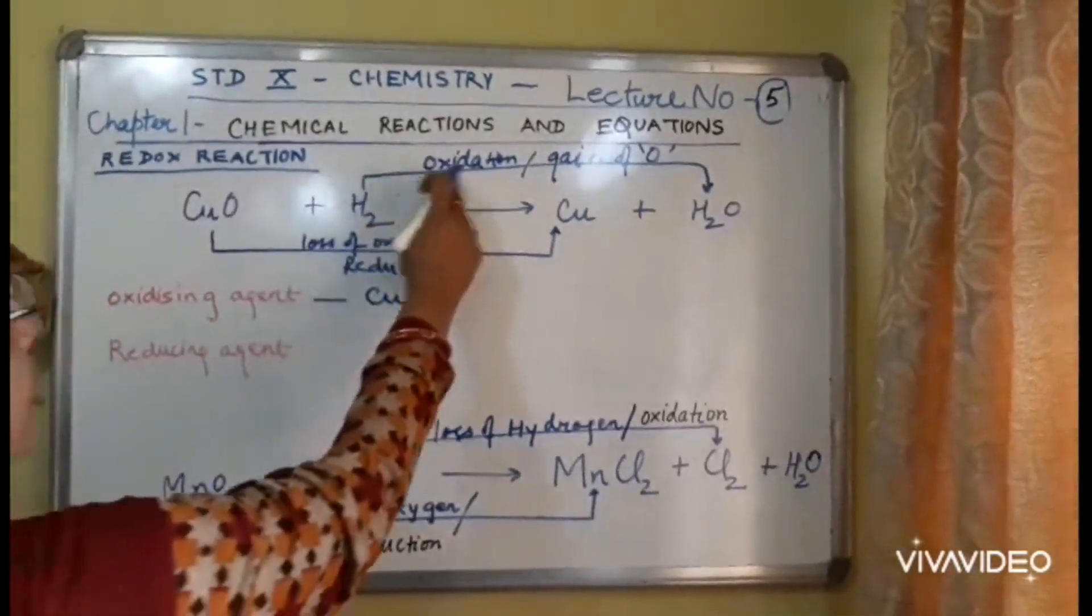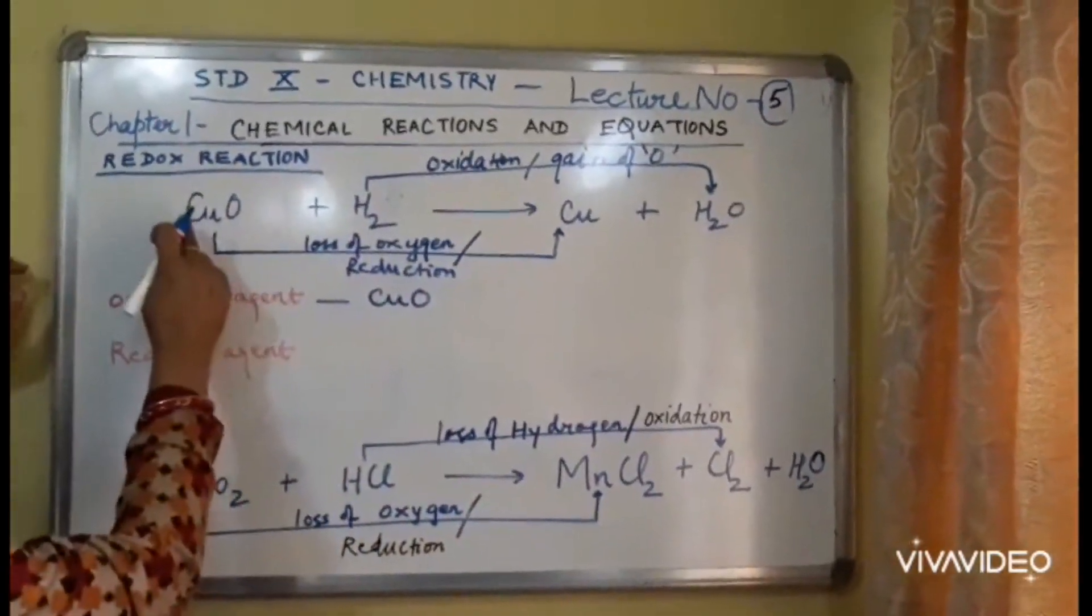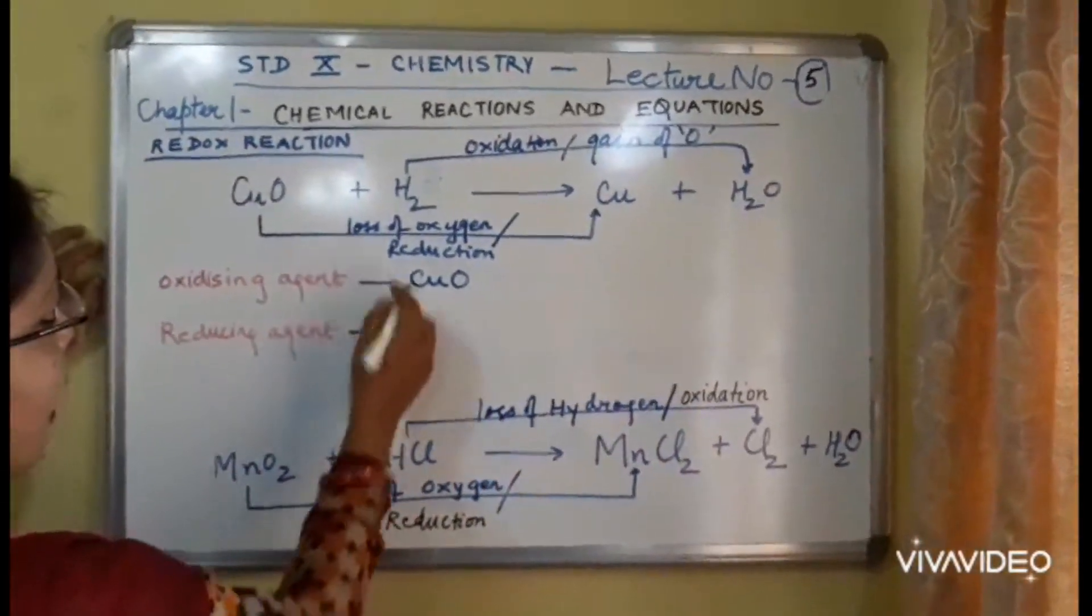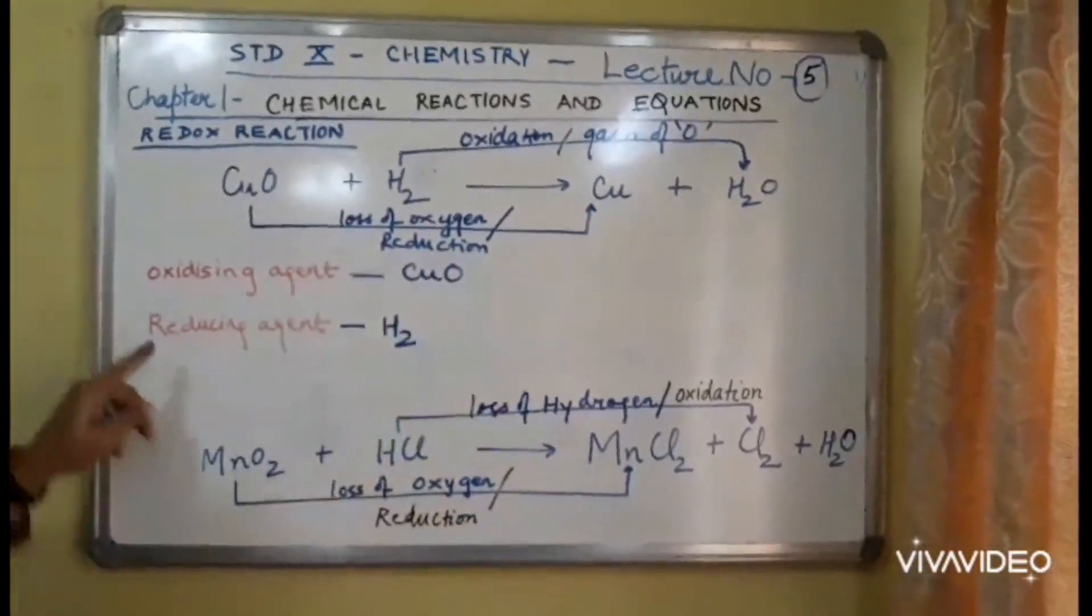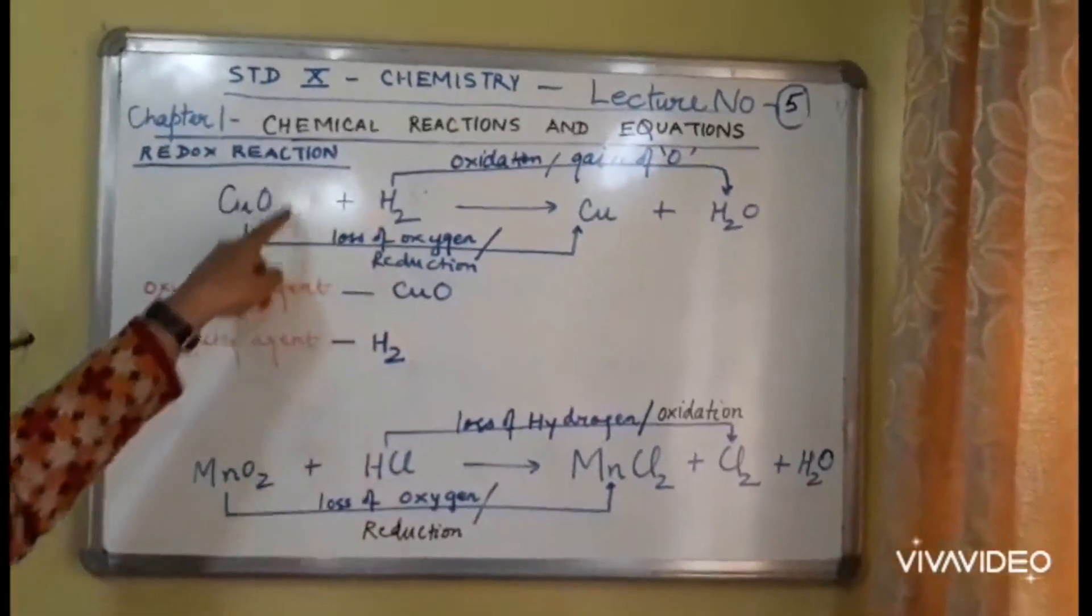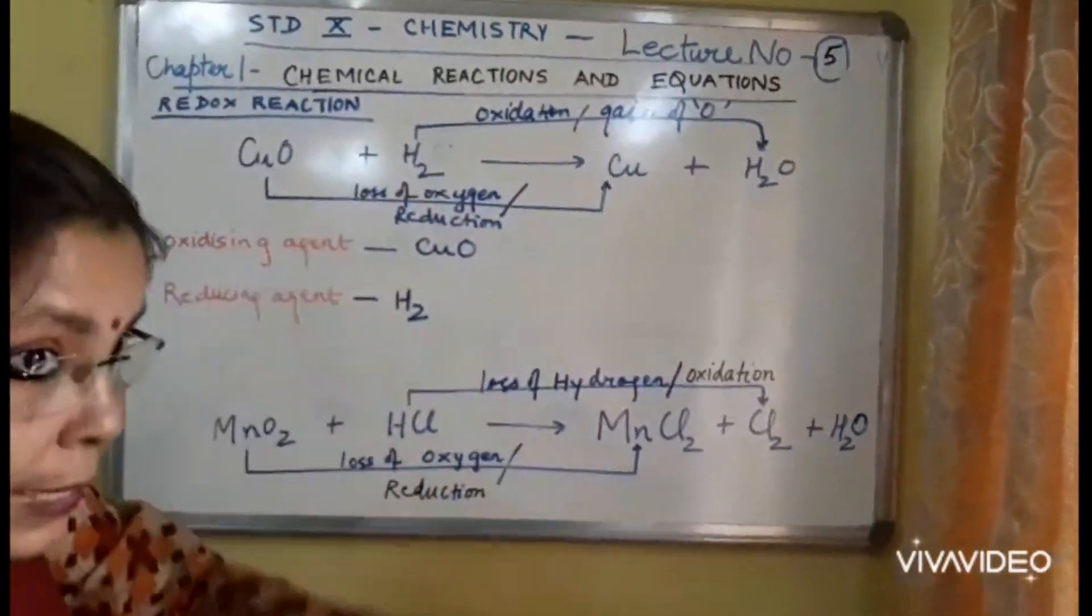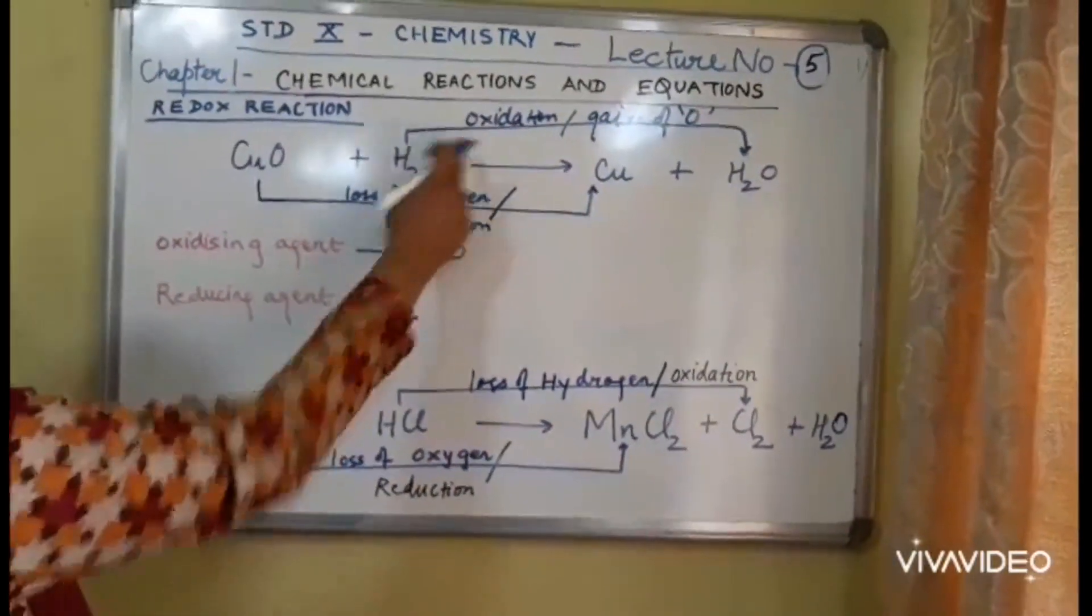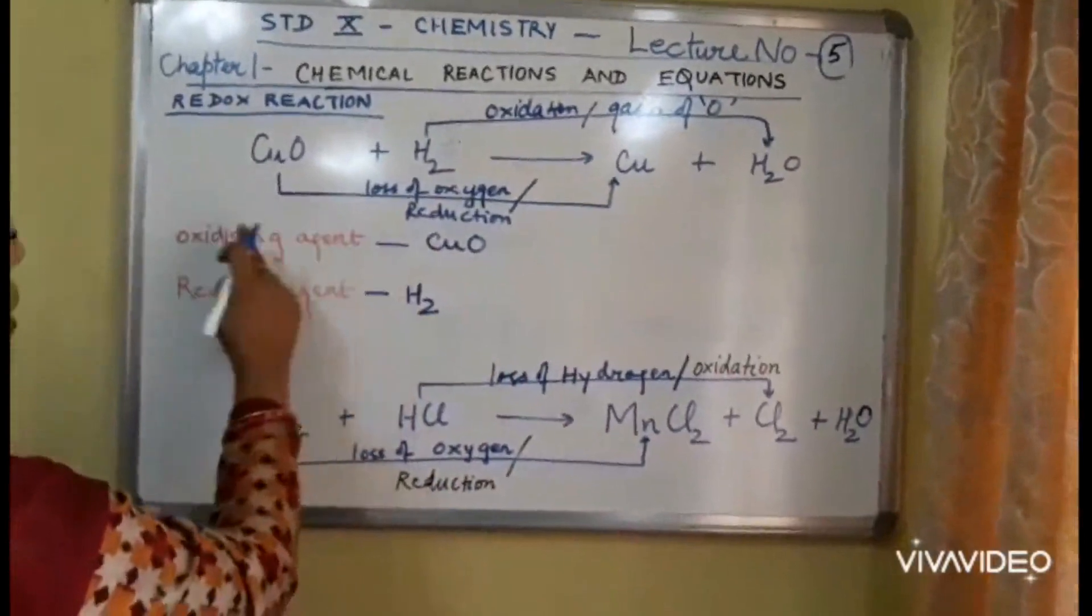Reverse. H2 gets oxidized and helps CuO to get reduced. H2 ka oxidation ho raha hai. It acts as a reducing agent. Reducing agent is an agent which helps other substance to get reduced. And in return, it itself gets oxidized. So jiska oxidation ho ga, woh reducing agent. Jiska reduction ho ga, woh oxidizing agent.